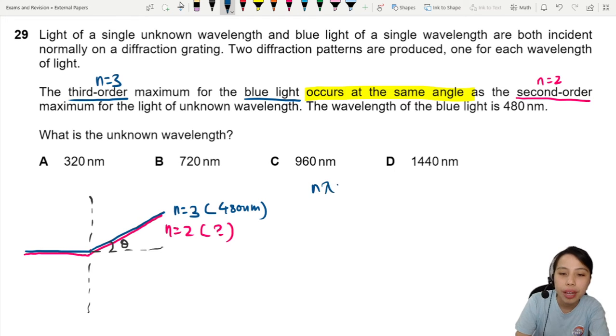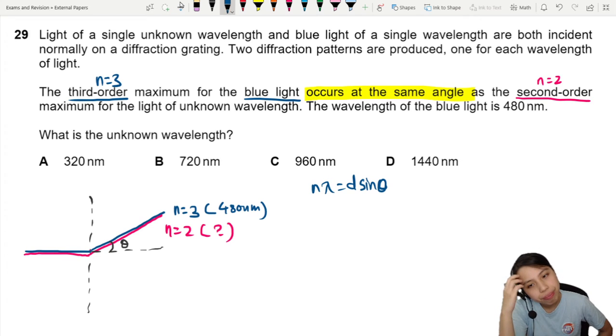So n lambda equals d sin theta is our equation for diffraction grating. In this case, we only know the lambda and the n. How about the rest? We don't know. But for each wavelength or each grating, the d is the same. Same grating, right?